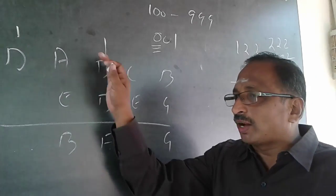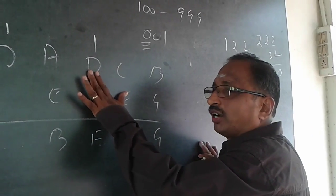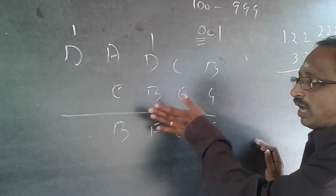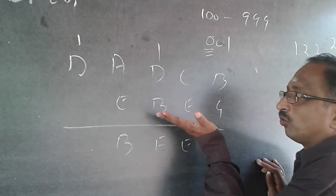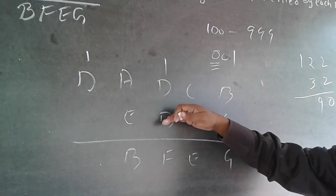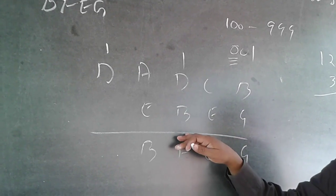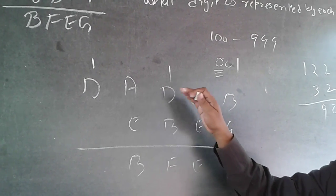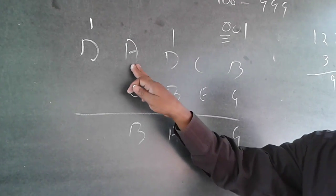Coming to the third spot: I am 100% sure D is only 1 and B is going to be definitely 2 or above. When you compute D minus B — that is 1 minus 2 — it is not possible. Therefore, this D will have to borrow from A, because 1 minus 2 is not possible, so D borrows from A.